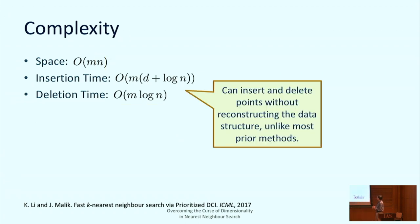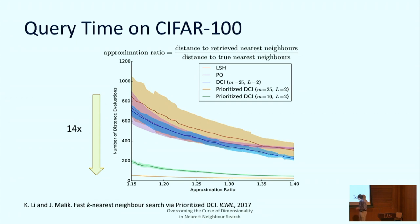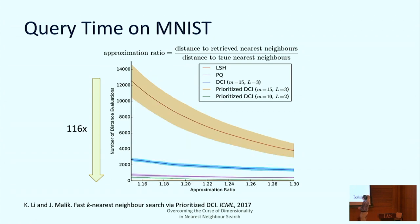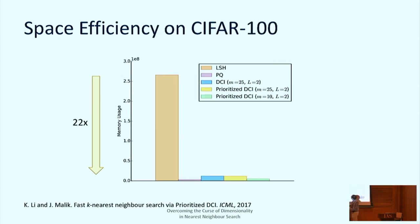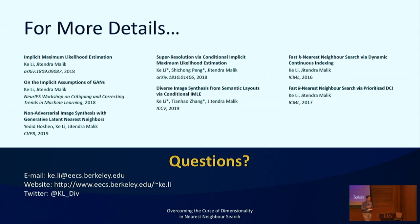On CIFAR-100, we reduce search time by a factor of 14; on MNIST, by a factor of 116 compared to LSH. In terms of space efficiency, we use 20 times less memory than LSH on both CIFAR and MNIST. That concludes the talk — I'd be happy to take questions offline.